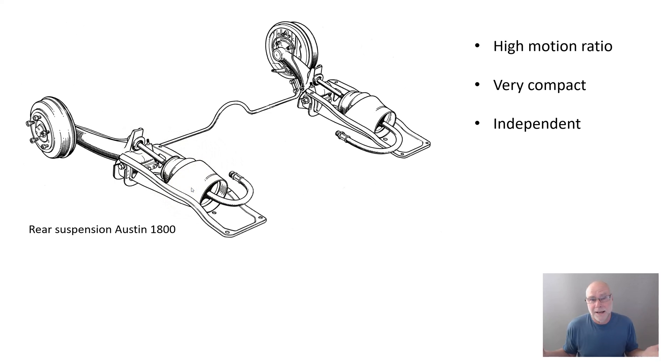Having a high motion ratio has some disadvantages. In a normal car, it's harder to damp and the stresses in the suspension are higher. But in Hydroelastic, the high motion ratio was more than made up for in terms of it being very compact. It's basically intruding almost nothing into the car's bodywork. It's an independent suspension design. We're talking about the 1960s where independent rear suspension was relatively rare on cars.